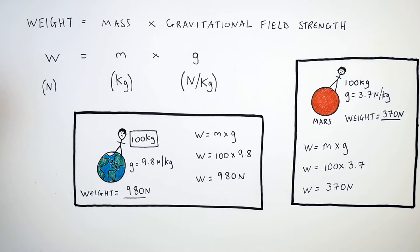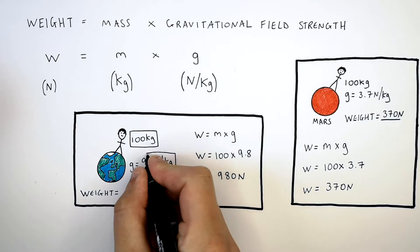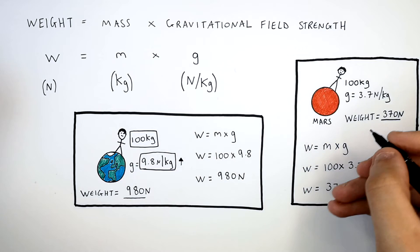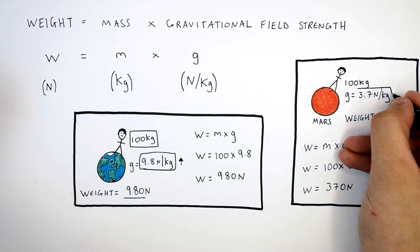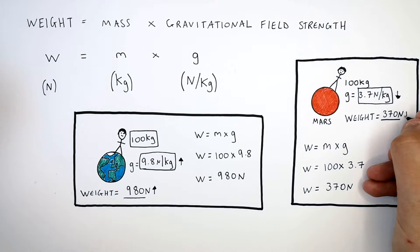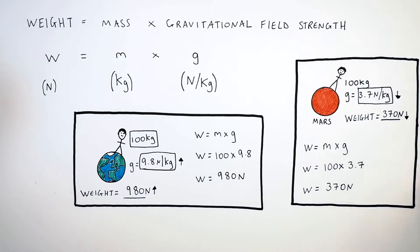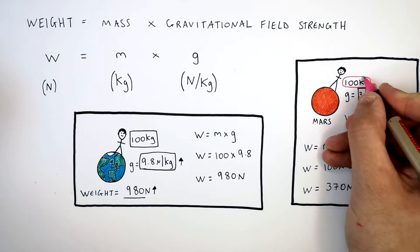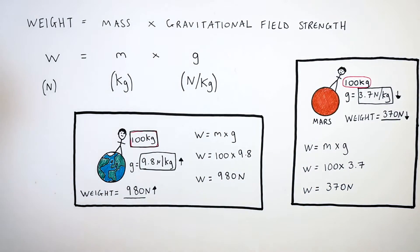So weight and gravitational field strength are directly proportional. If you increase the gravitational field strength, you are going to have an increased weight. If you lower the gravitational field strength, you are going to decrease the person's weight. And weight and mass are also directly proportional.